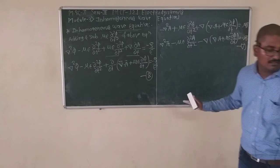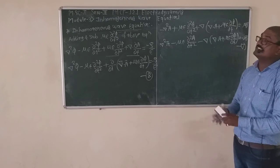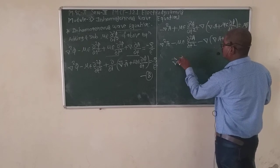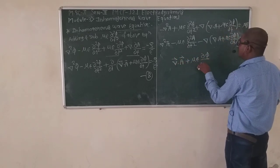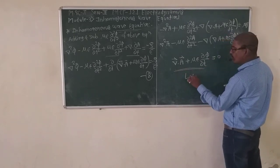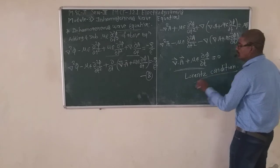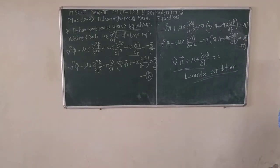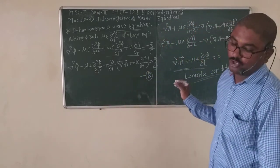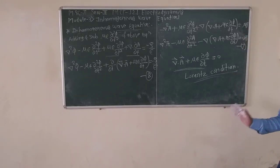Equations 7 and 8 are the two inhomogeneous wave equations in terms of magnetic vector potential A and scalar potential phi. However, these two equations are interlocked with the condition: del dot A plus mu*epsilon*(d phi/dt) equals 0. This condition is known as the Lorentz condition.